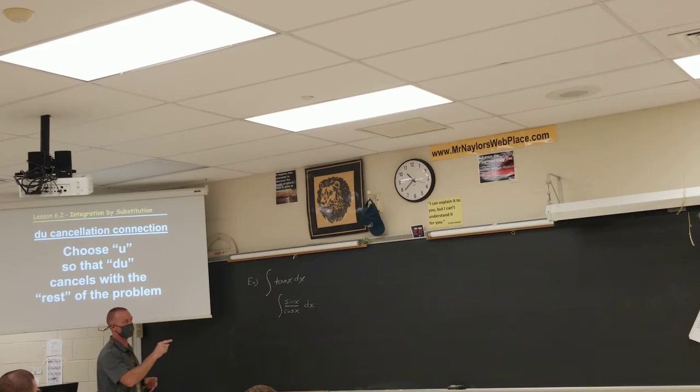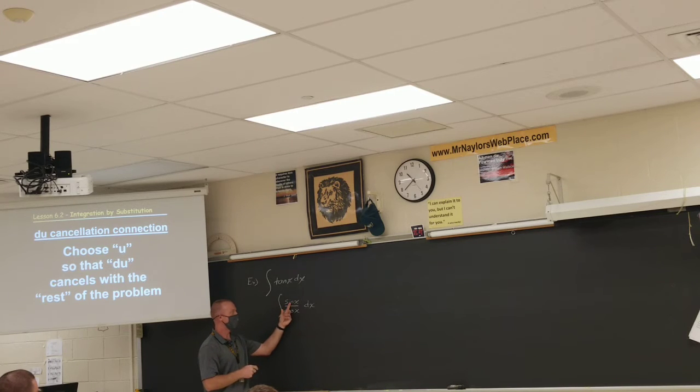Now we have like two things, something that could be u, something that could be the inside. The derivative cancels with the rest of the problem. If u equals sine, the derivative is cosine. Seems like there's a connection. Wait, but if u equals cosine, the derivative would be negative sine. Seems like it has a connection.